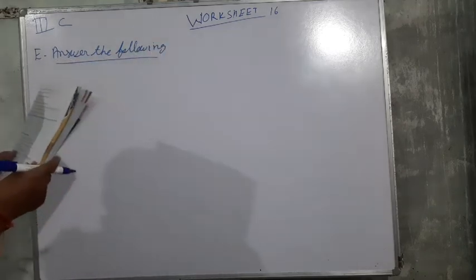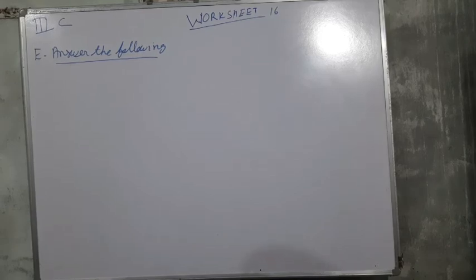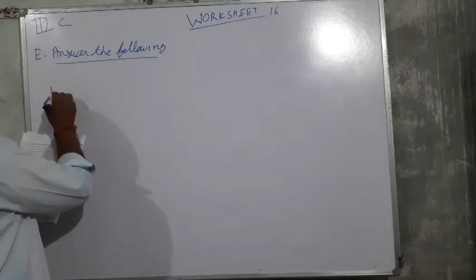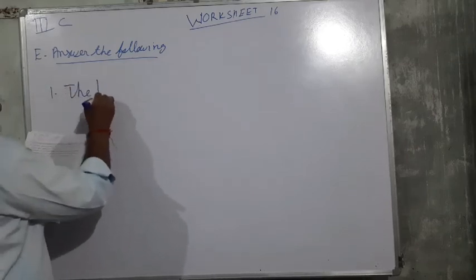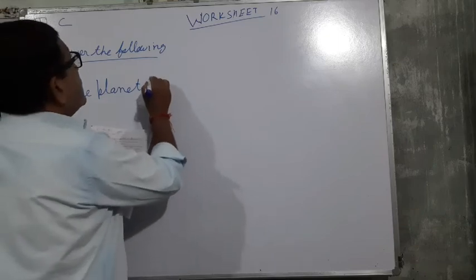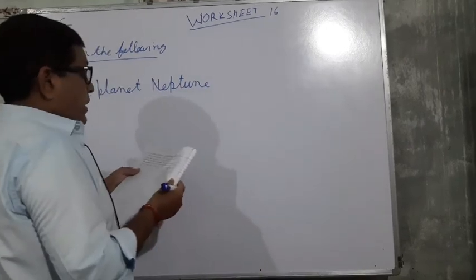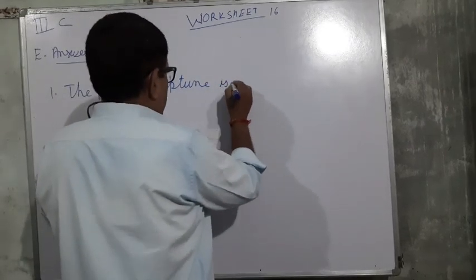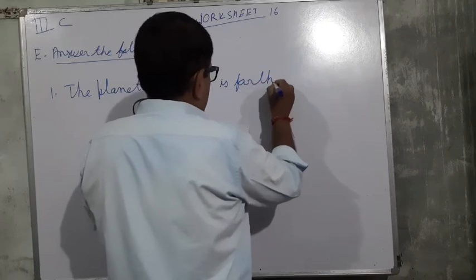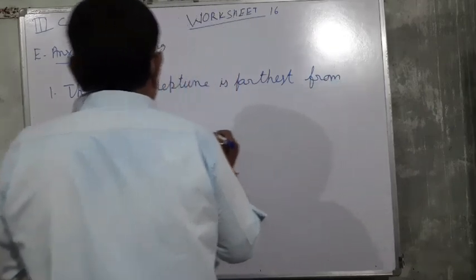The first question: which planet is the farthest from the earth? The answer you have to write is: the planet Neptune is the farthest from the sun.